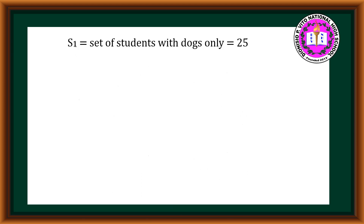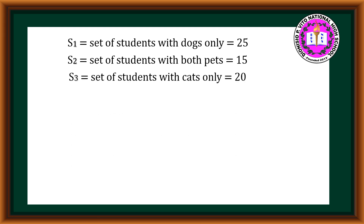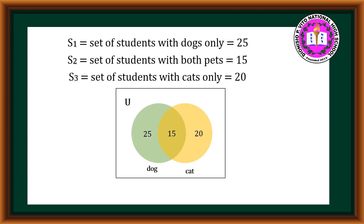Therefore, S₁ (set of students with dogs only) = 25, S₂ (set of students with both pets) = 15, and S₃ (set of students with cats only) = 20. Our Venn Diagram shows students with dogs only = 25, students with cats only = 20, and the intersection — students with both pets — = 15.